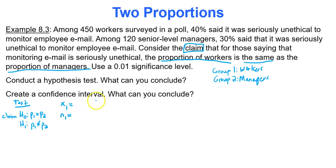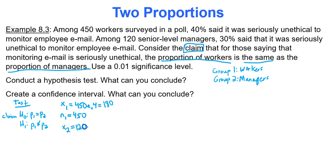For group one, 40% of 450 workers said it was seriously unethical: 450 × 0.4 = 180 successes. For group two, 30% of 120 managers said it was seriously unethical: 120 × 0.3 = 36 successes. The sample sizes are 450 for workers and 120 for managers. These four values — x1 = 180, n1 = 450, x2 = 36, n2 = 120 — are what you need for Google Sheets.